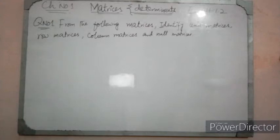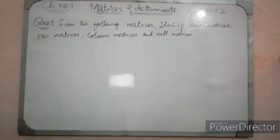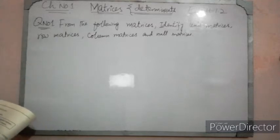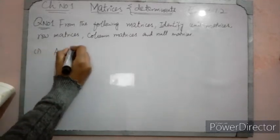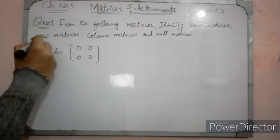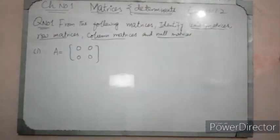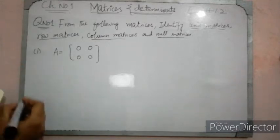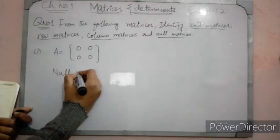Let's go to the first question. The first question is: from the following matrices, identify Unit Matrix, Row Matrix, Column Matrix, and Null Matrix. The first part gives us matrix A. If we look at this matrix, all the elements are zero. We have to identify the null matrix. The definition is that all elements are zero, so we call it a zero matrix or null matrix. So this matrix is our null matrix.